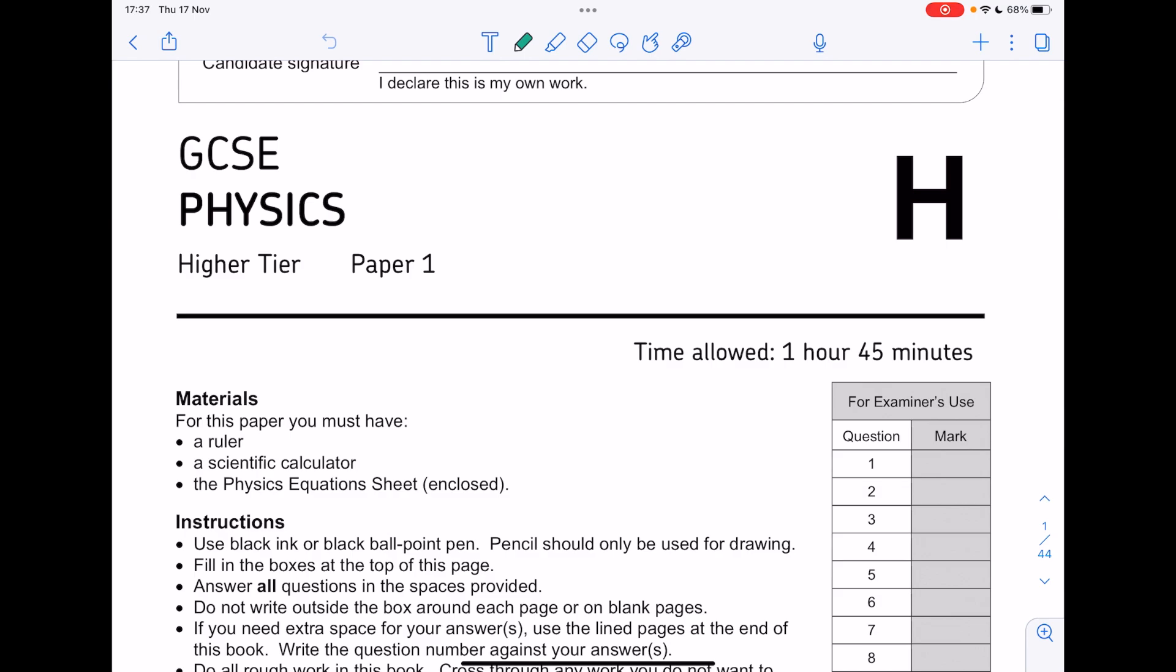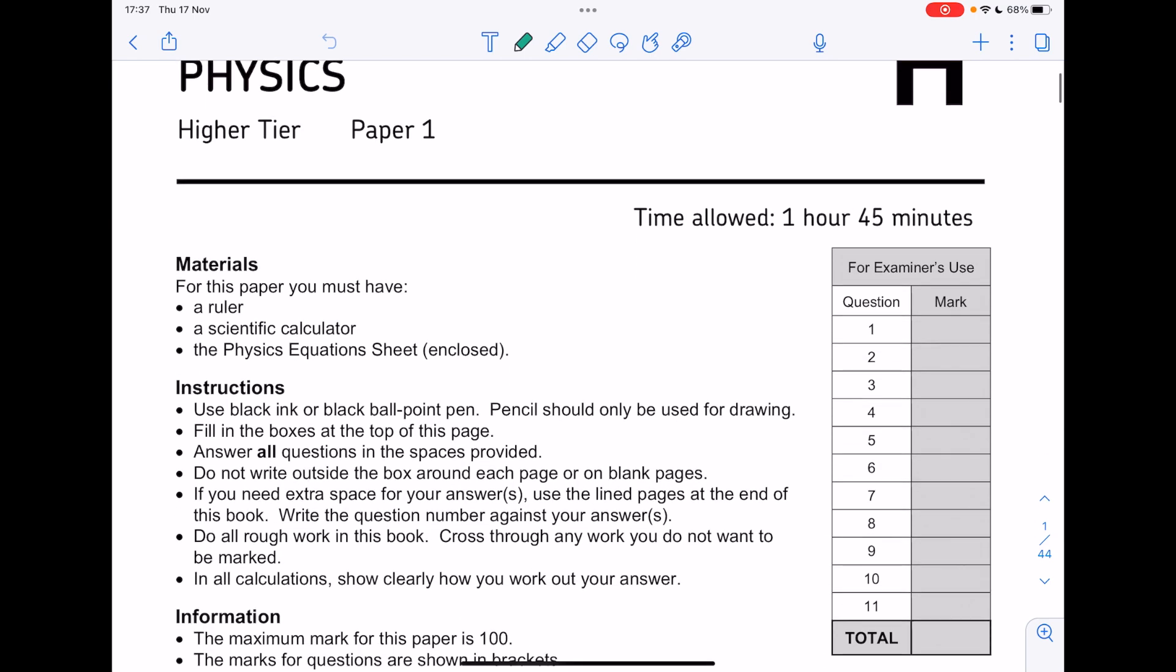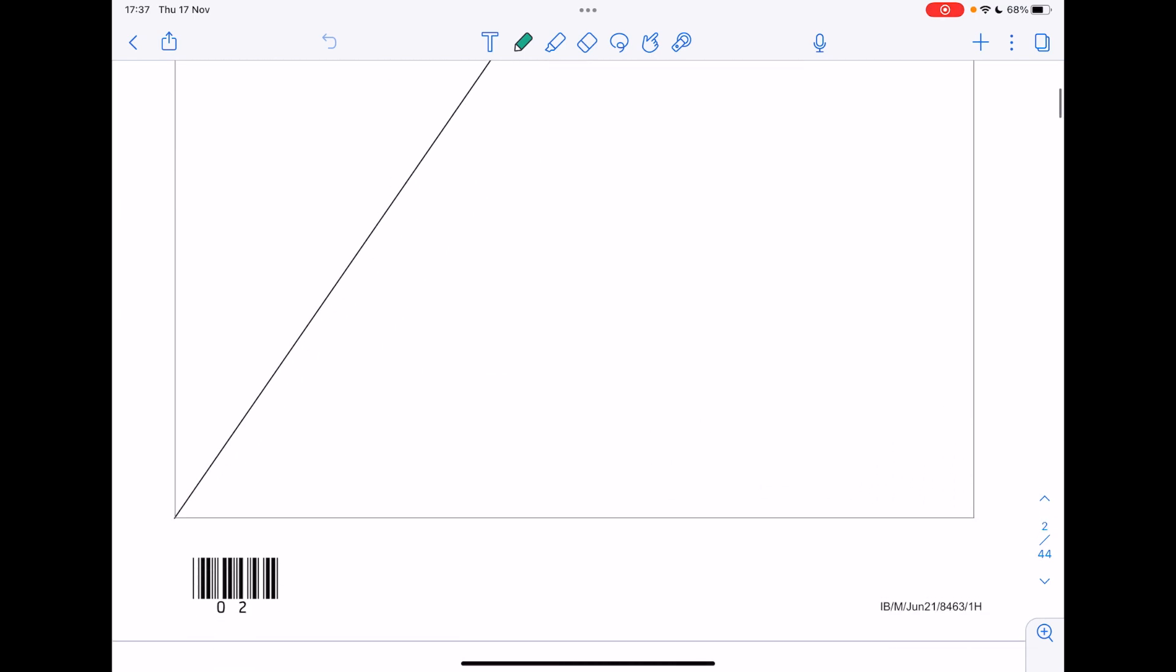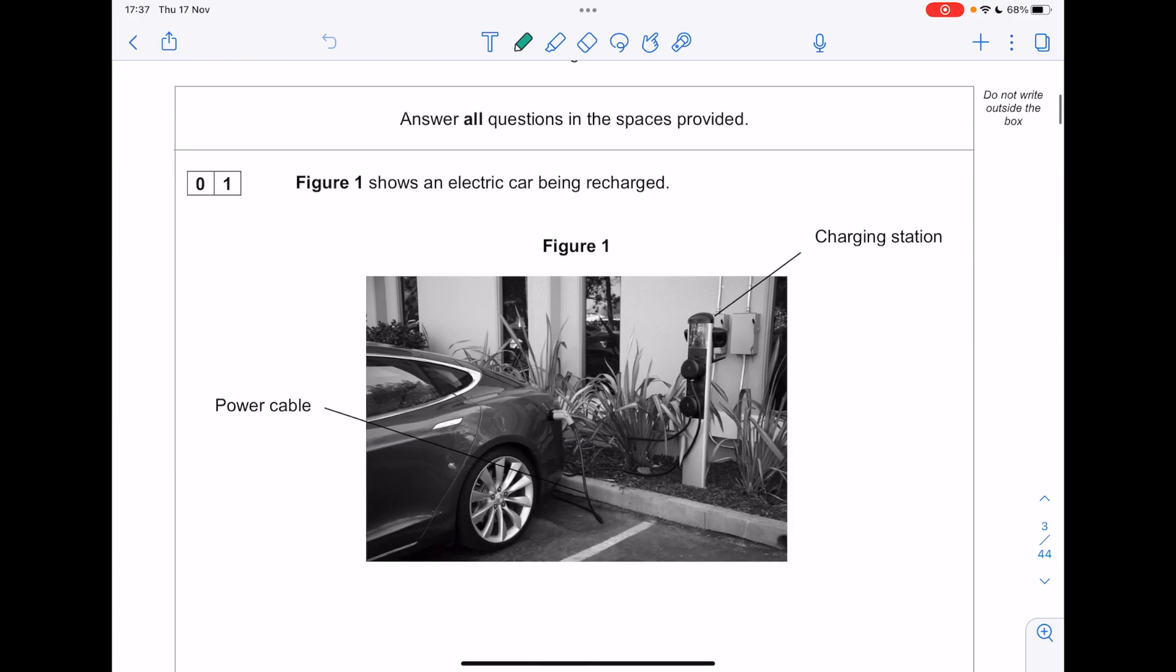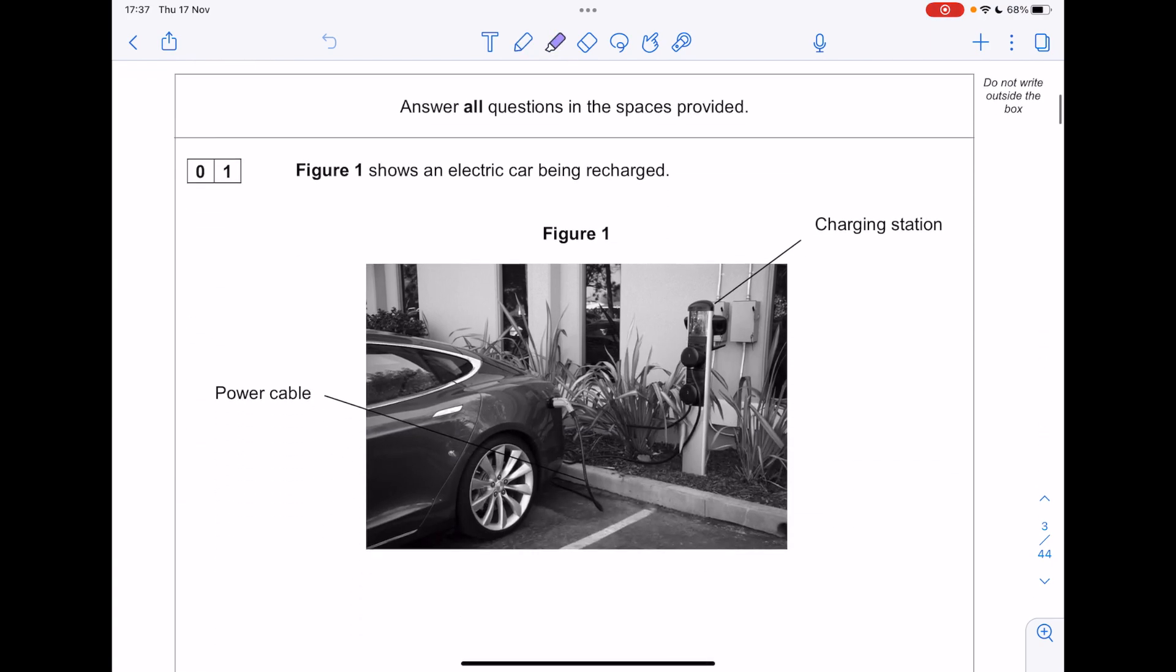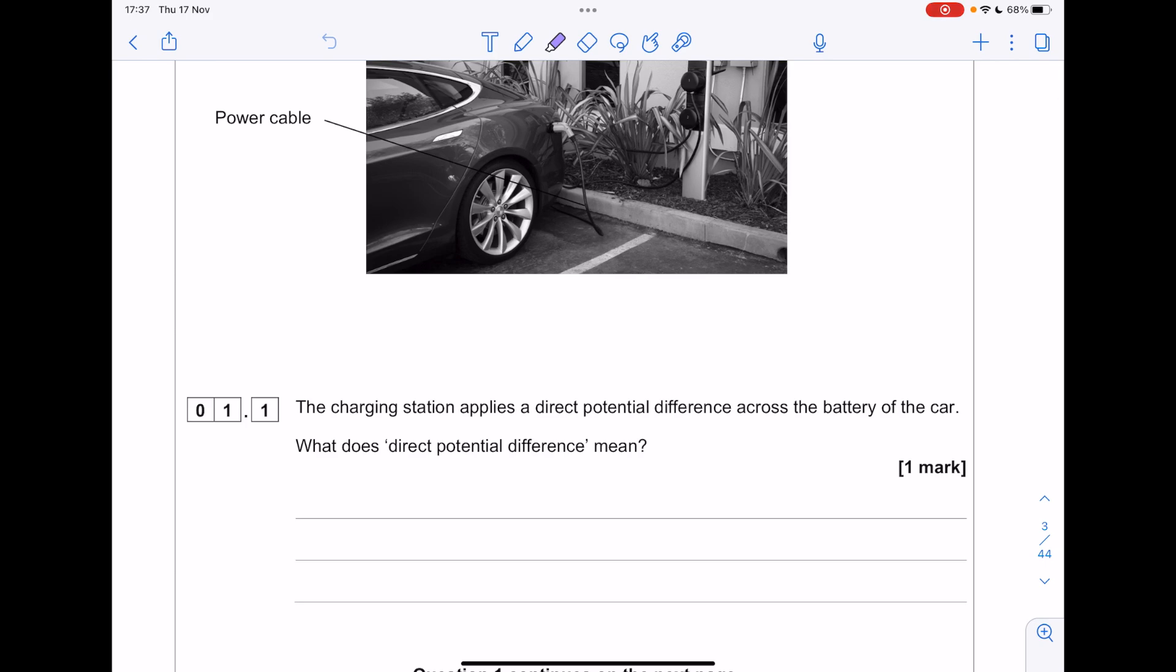This is an AQA GCSE physics higher-tier paper one from June 21. Figure 1 shows an electric car being recharged. The charging station applies a direct potential difference across the battery of the car.